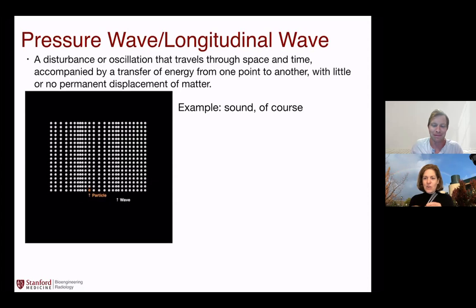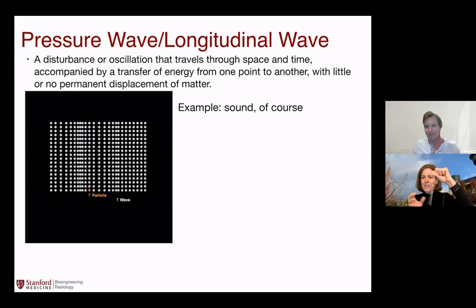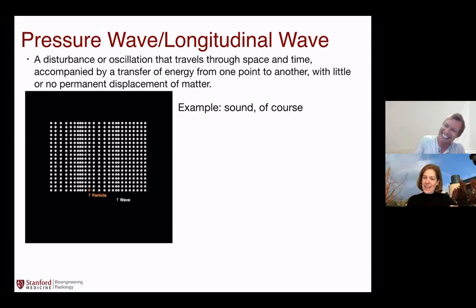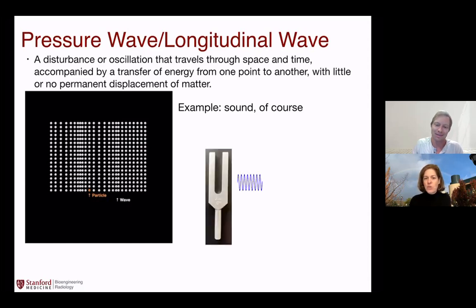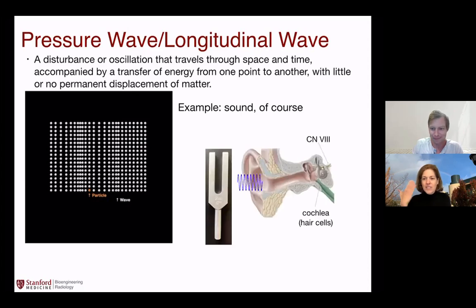Sound is a great example of a pressure wave. If you hit a tuning fork, you can cause it to ring and create a pressure wave. That pressure wave is sinusoidal — high pressure, low pressure — and it goes into our ear: through the outer ear, across the eardrum into the middle ear, and into the inner ear where there's the cochlea with little hair cells that pick up the pressure waves and send a signal up into the brain.